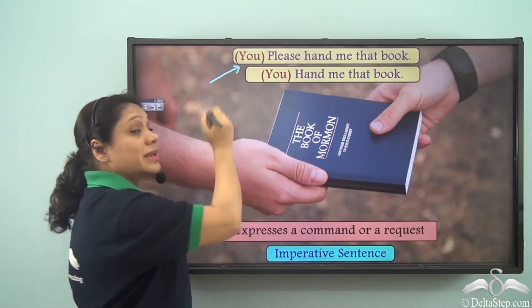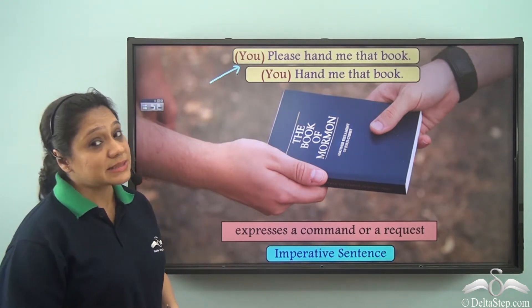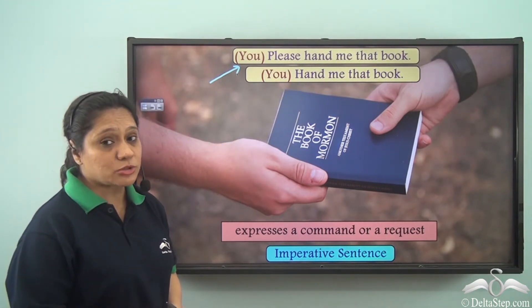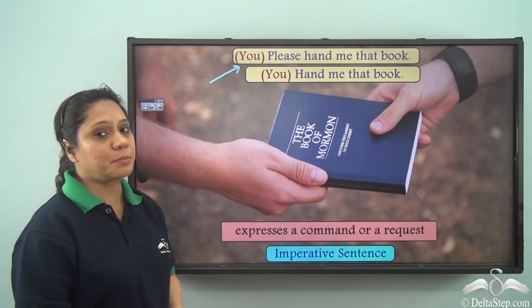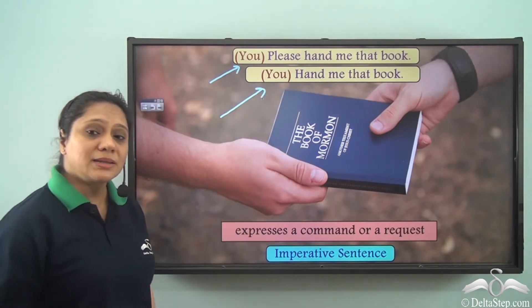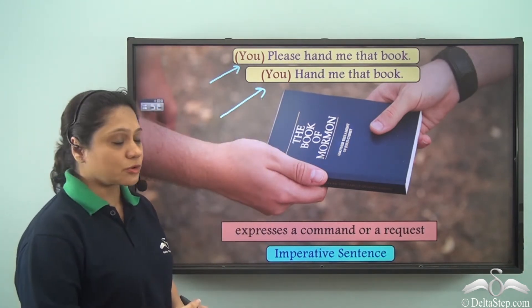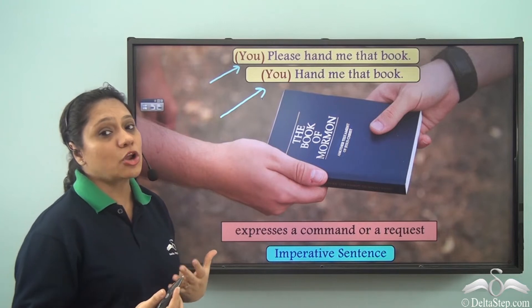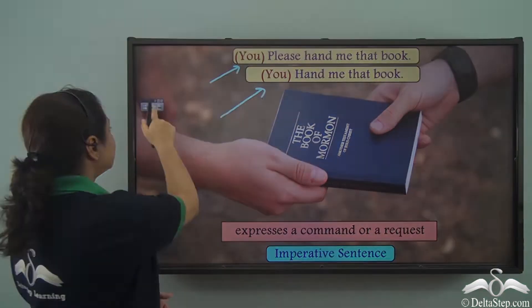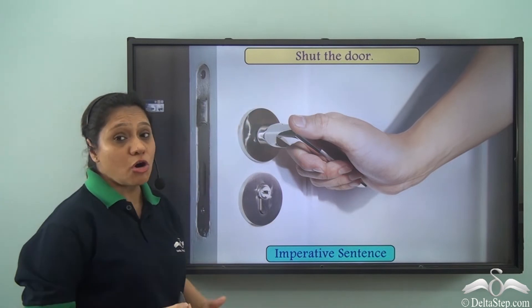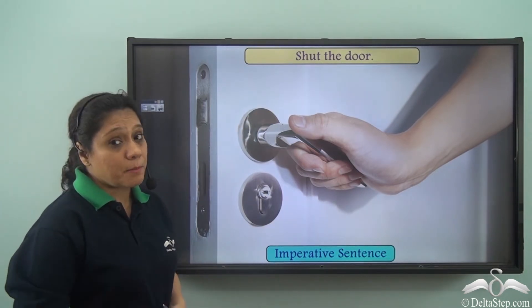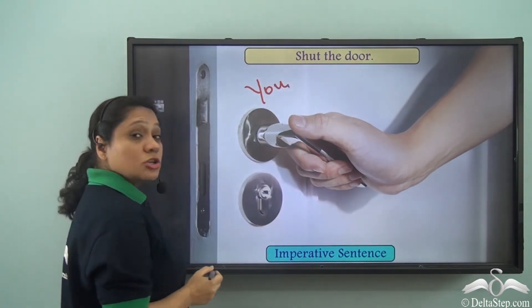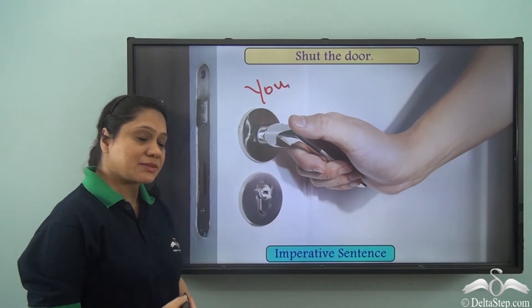So 'you' is not mentioned — it is implied. Similarly, when I say 'hand me that book,' I actually mean 'you hand me that book.' So 'you' is implied in the second sentence also. In imperative sentences, the subject is usually not mentioned. For example, if I say 'shut the door,' I am giving a command and I actually mean 'you shut the door.' So this sentence is also an imperative sentence.